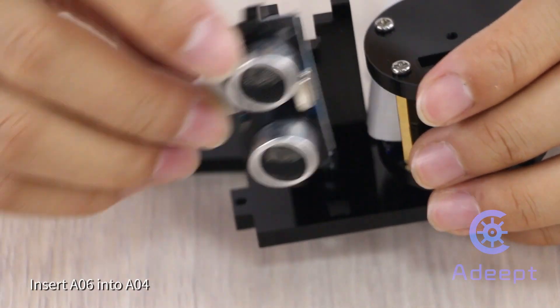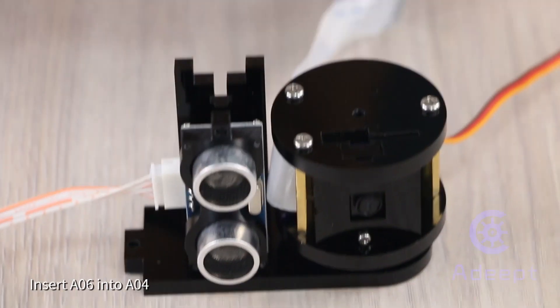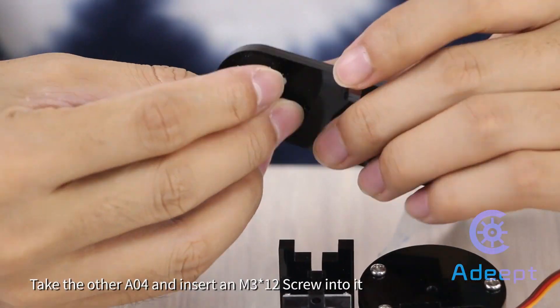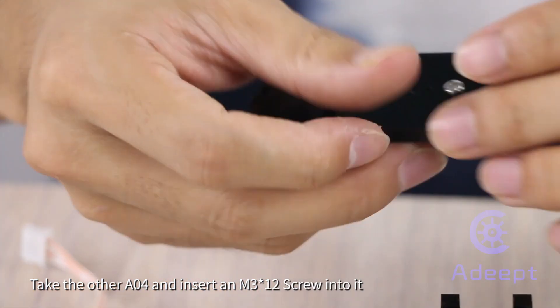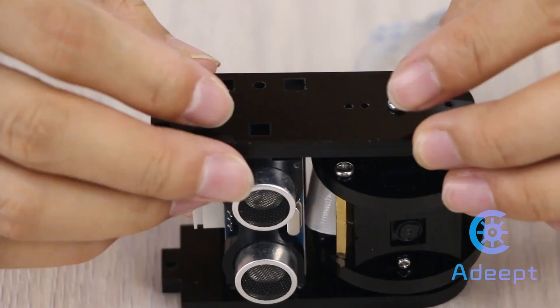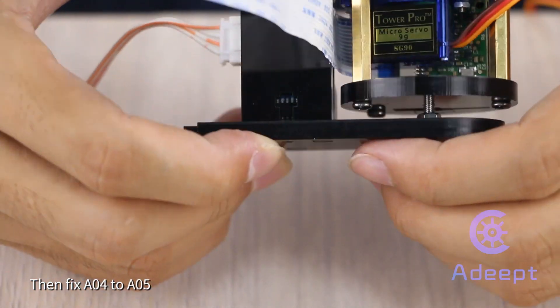Insert A06 into A04. Take the other A04 and insert an M3 by 12 screw into it. Then fix A04 to A05.